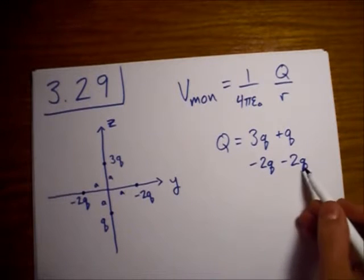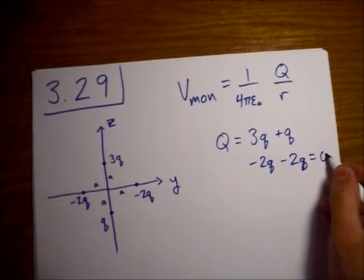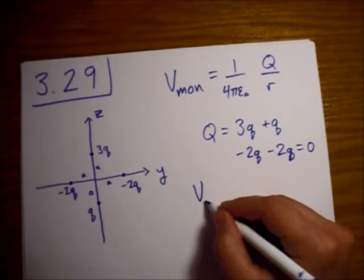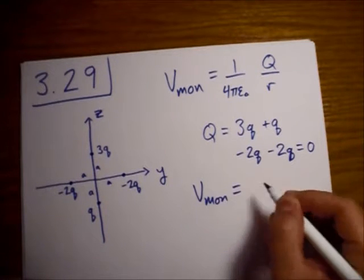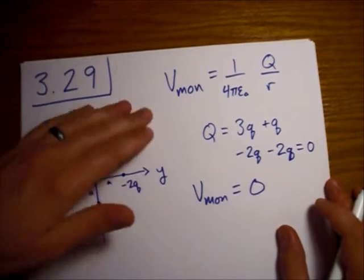Okay? So, 3 plus 1 is 4. Minus 2 minus 2 is equal to 0. So, our monopole term for our potential is equal to 0.